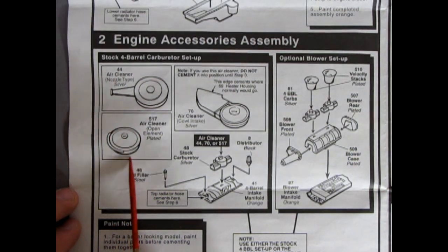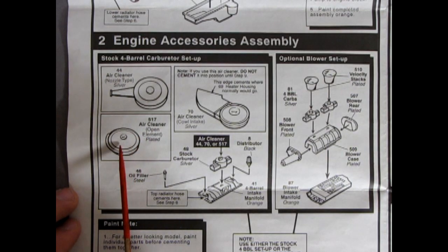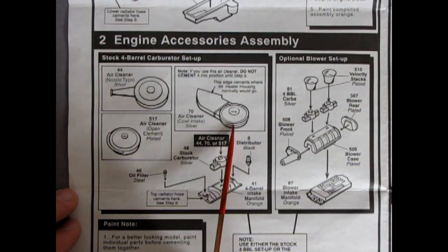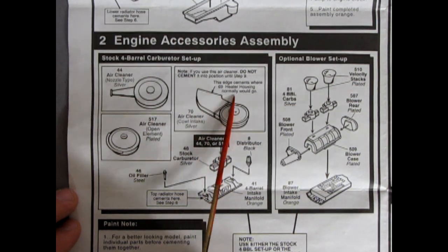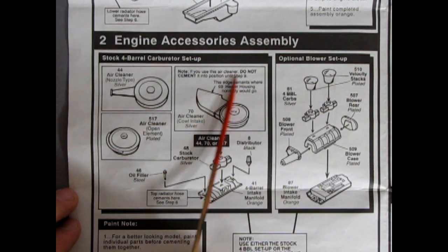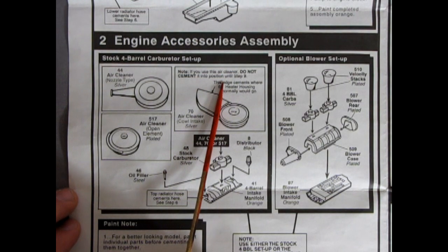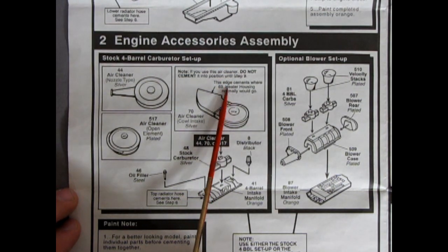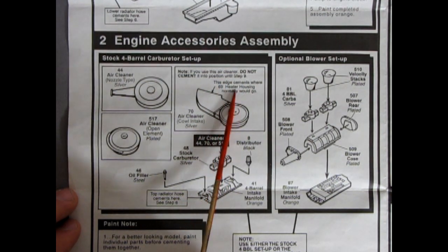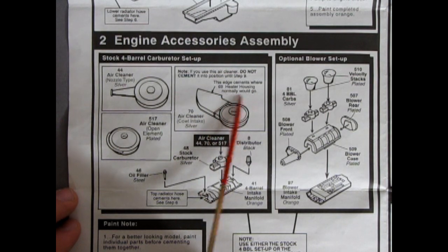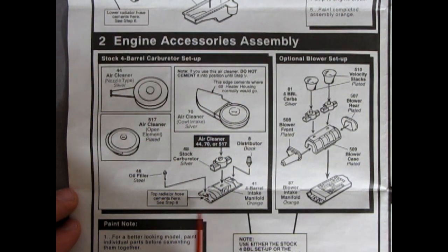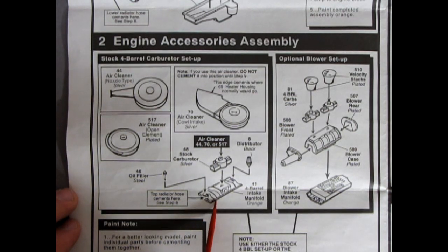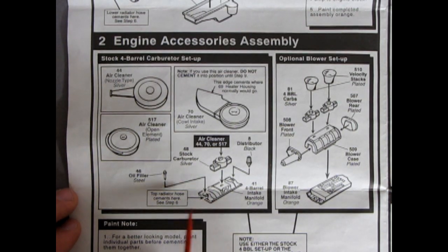You actually get four different types of intakes on here. So you've got this type of air cleaner with the nozzle sticking out the side which they tell you to paint silver. Then you've got an open element chrome air cleaner as well as a sort of racing style air cleaner with the big wide air intake that bends back. And it says note if you use this air cleaner do not cement it into position until step nine.